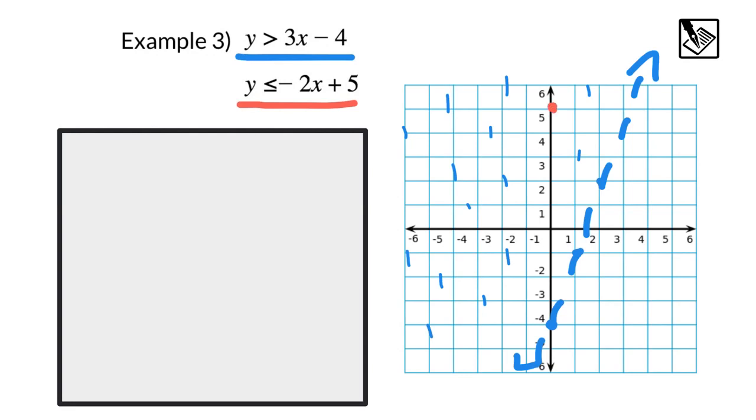Which is y is less than or equal to negative 2x plus 5. Graphing that one, we have a y intercept at 5, a slope of negative 2, which would be down 2 over 1. I'll get another point there. This does have the or equal to as a part of the inequality, so this will be a solid line. And using that shading shortcut, it says y is less than or equal to, which means I'm going to shade downward from this line. That would be all this region below the line.